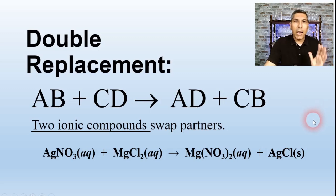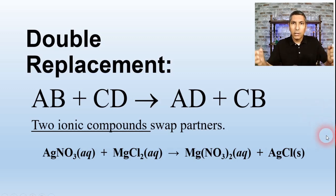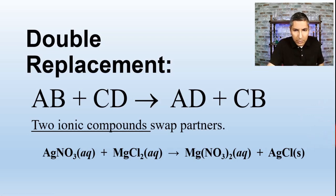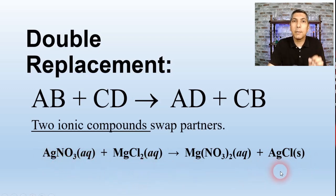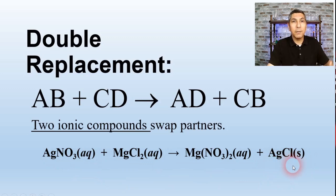If you were to actually carry this reaction out in the lab, you would see two solutions being added together — both aqueous — and you would see a solid being formed: a white solid of silver chloride. In chemistry, this solid formed from the addition of two aqueous solutions is called a precipitate. So you might say that this AgCl is a precipitate in this process.